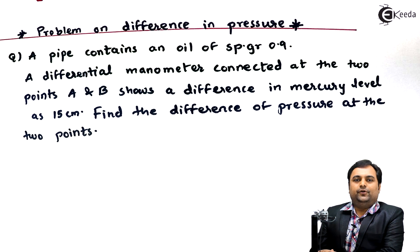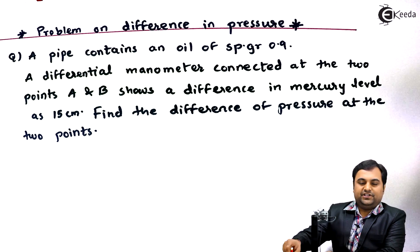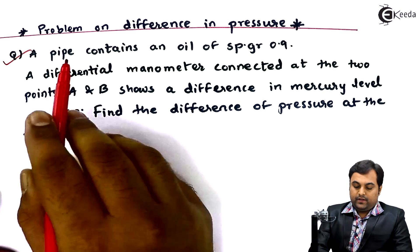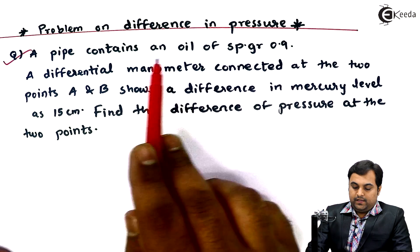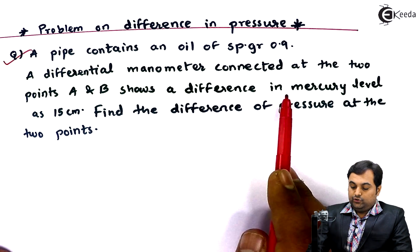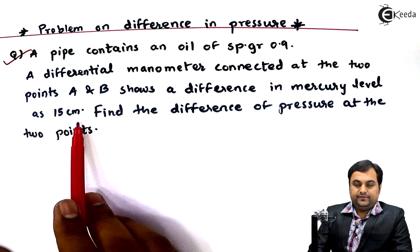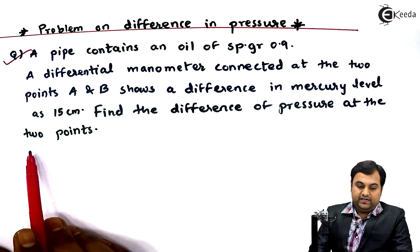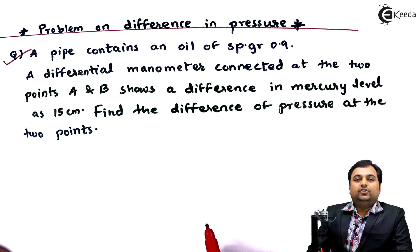Hello friends, in this video we will see a problem on how to calculate the difference of pressure using a differential manometer. A pipe contains an oil of specific gravity 0.9. A differential manometer connected at two points A and B shows a difference in mercury level of 15 centimeters. Find the difference of pressure at the two points.